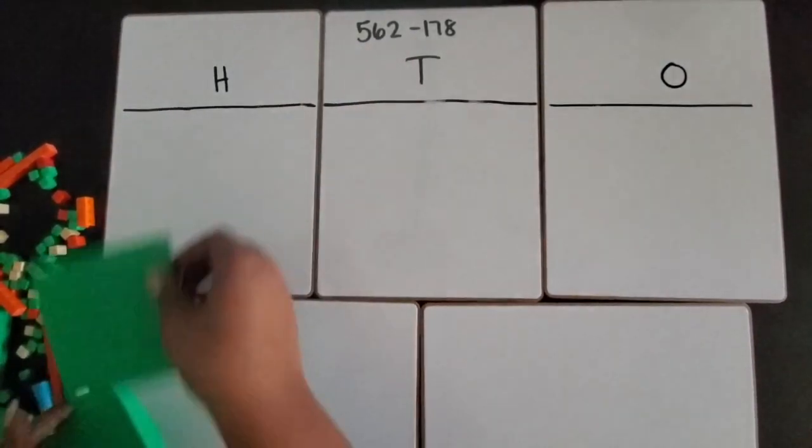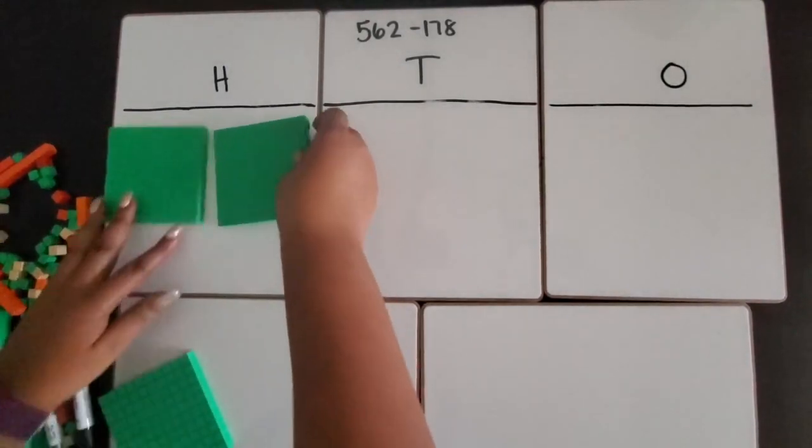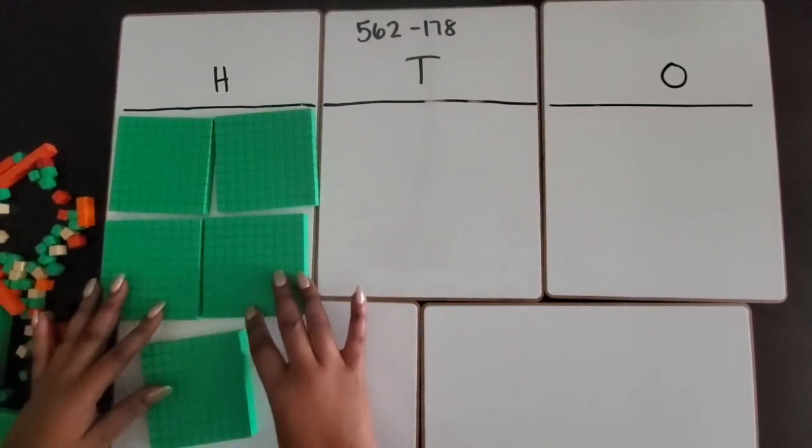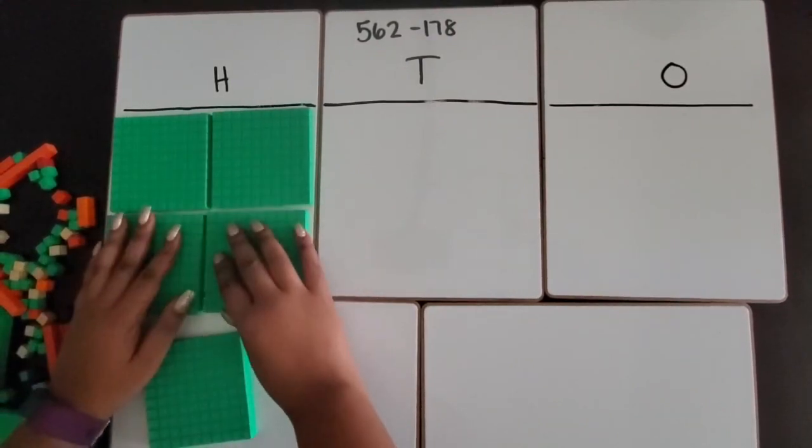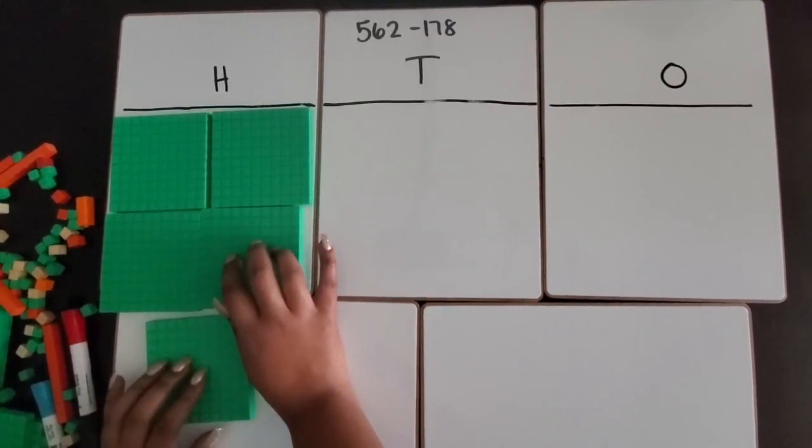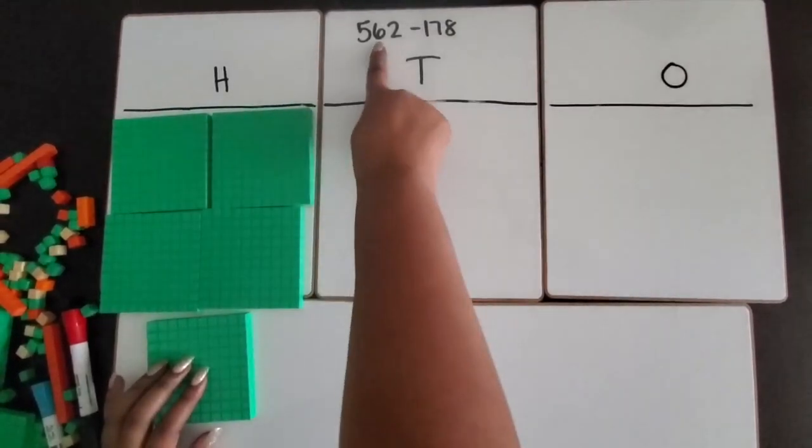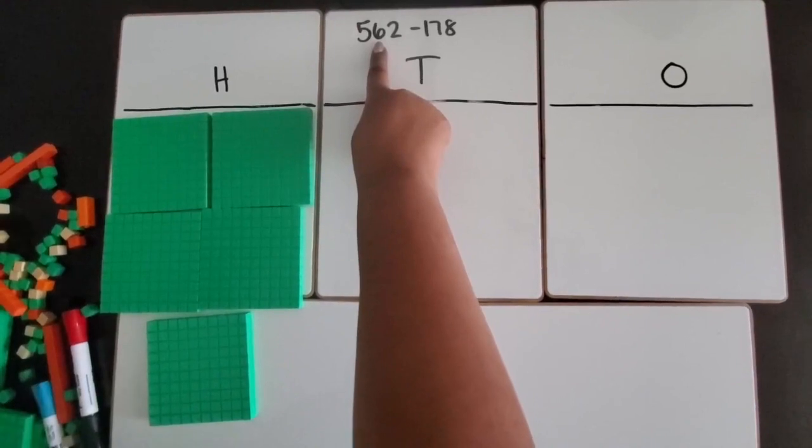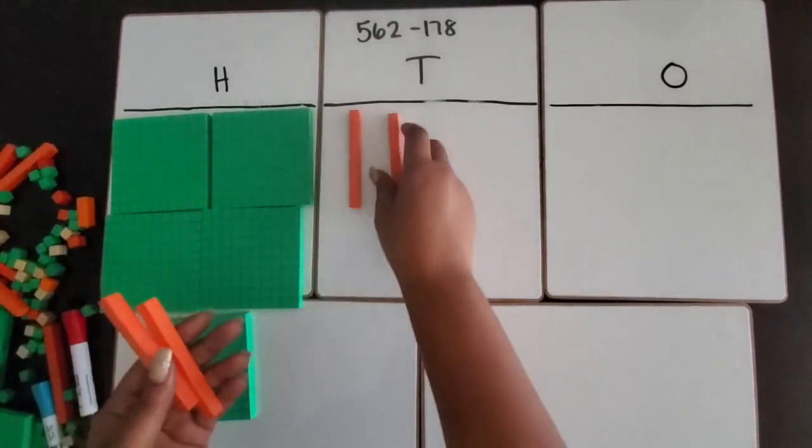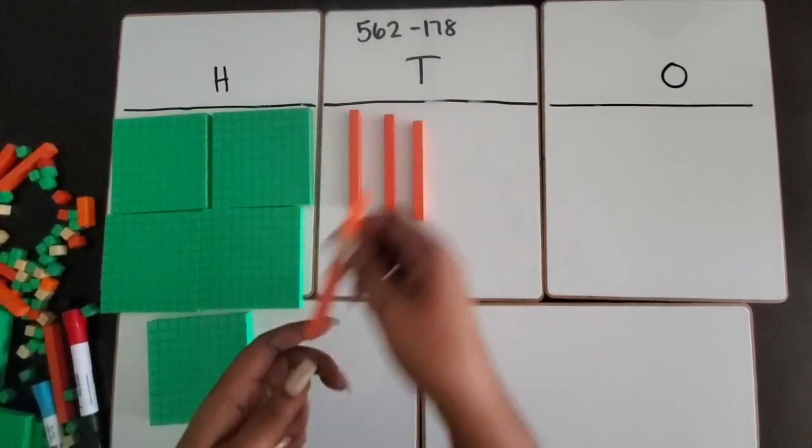I'm going to put those out. These are place value blocks to represent the different place values. These are hundred flats that represent 100, so we have 500 in 562. You have six tens, so we have these 10 rods that represent our tens.